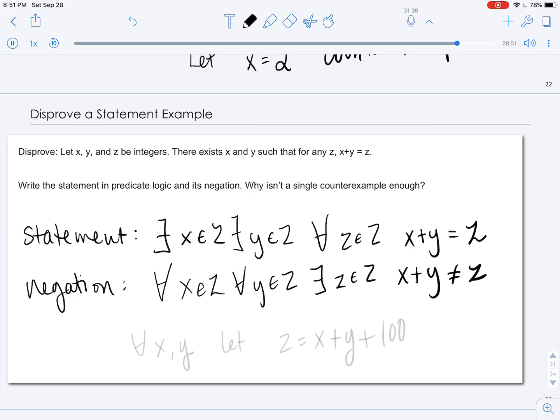So just giving one counterexample would not be sufficient. Essentially, we have to come up with an algorithm that would show that this could not be the case. So we want to consider how we can always find this one integer z that's not going to equal x plus y.